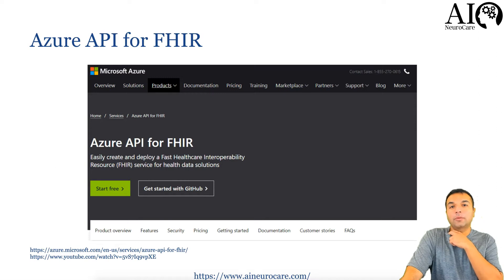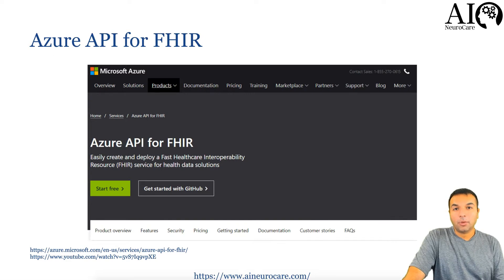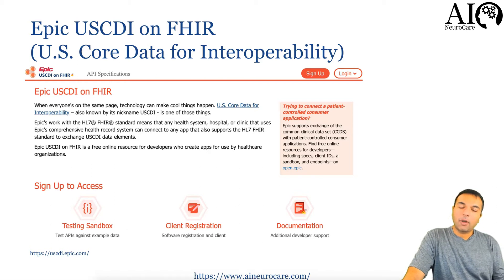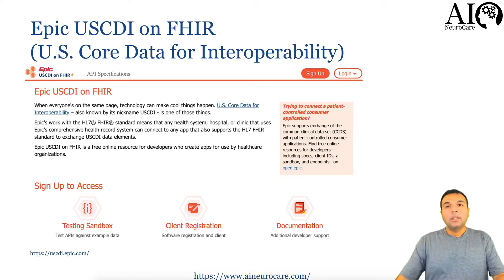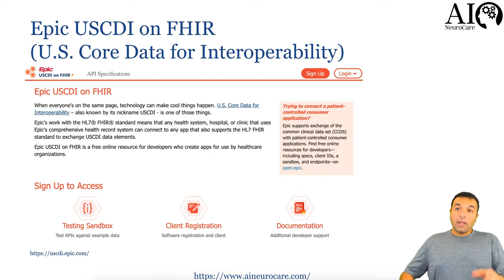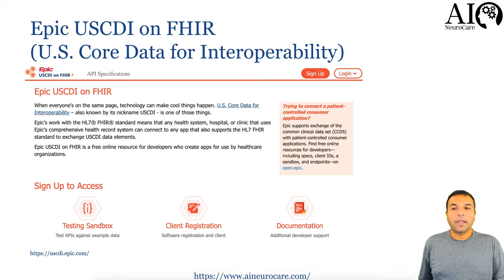Azure Health Cloud Data Provider has a FHIR API built in so it can collect and reproduce data appropriately. Epic — one of the largest EHR systems alongside Cerner — also released U.S. Core Data for Interoperability, which is an API built on the FHIR platform. Interestingly, Cerner and Epic together only control 39% of the market, which is quite small compared to duopolies like Coca-Cola and Pepsi, or Boeing and Airbus.